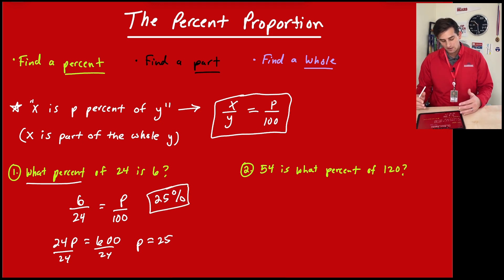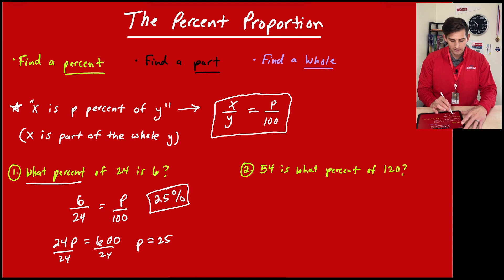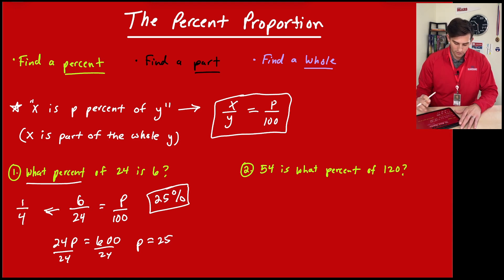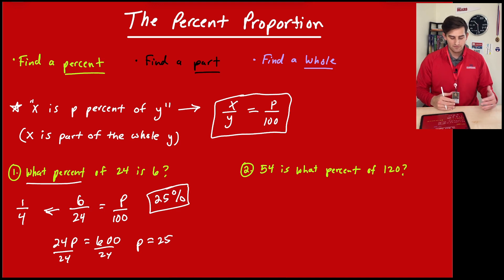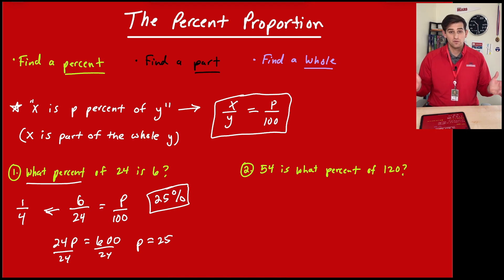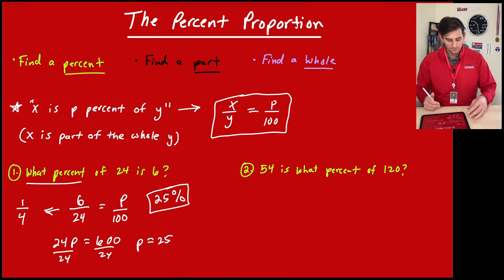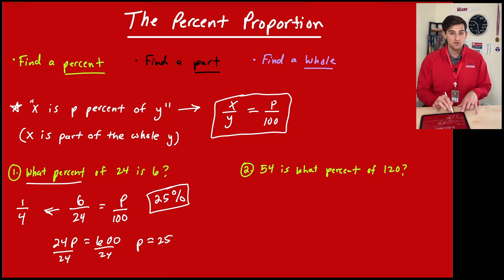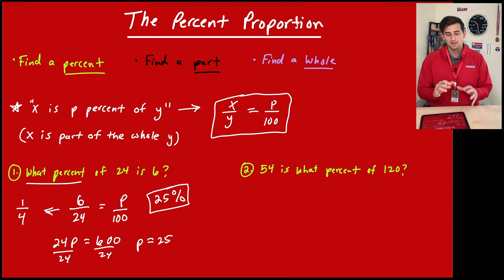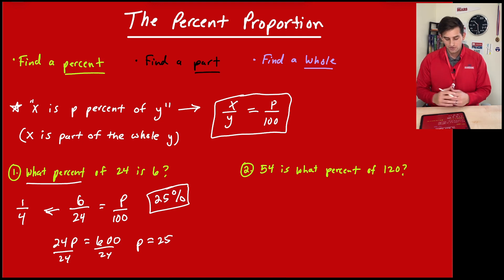Looking back at 6 over 24 — 24 is divisible by 6, so we could have written it as 1 over 4. We might have 1 fourth memorized as a percent: it's like a quarter, 25%. Another way: using 1 over 4 equals p over 100, since 4 times 25 gets to 100, then 1 times 25 gives the missing percent — 25%. So there are multiple ways to attack this, but cross multiplying is straightforward.